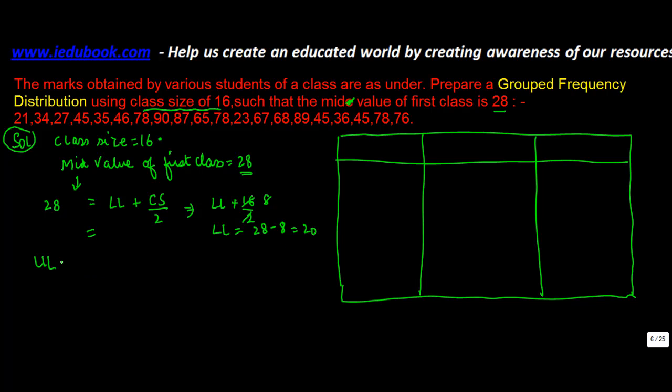Similarly for the upper limit, you can easily find out because you can now add this class size to the lower limit and get the upper limit. It is lower limit plus class size, which equals 20 plus 16, which is 36.